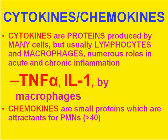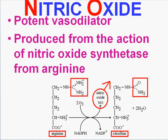Let's talk about a very small chemical called nitric oxide. It's made by the action of nitric oxide synthetase from the regular amino acid arginine. You can see there's a little nitro group here — it gets split off by this enzyme. In the process, NADPH goes to NADP+. The byproduct is called citrulline, which is arginine with the end of its amino group split off. Nitric oxide is probably one of the most potent vasodilators in the world.